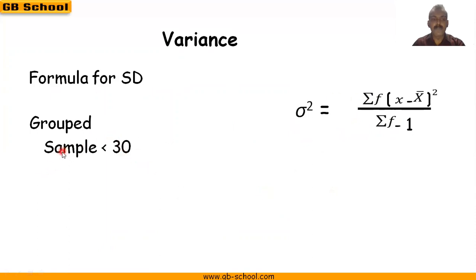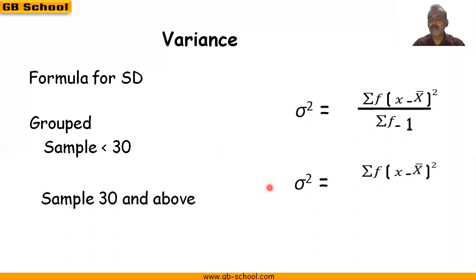Now this is the formula for variance when sample is less than 30. If the sample is 30 and above, the formula is going to be the same, only the denominator we retain as sum of f.